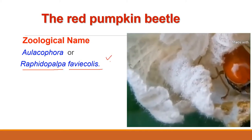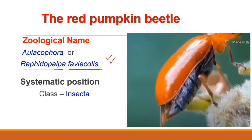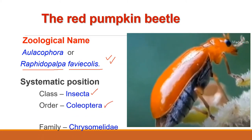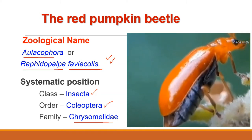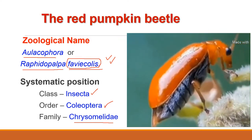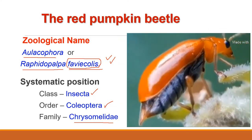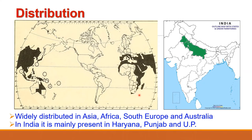Both names for the red pumpkin beetle are correct. As far as systematic position is concerned, it belongs to class Insecta, order Coleoptera, family Chrysomelidae, genus Aulacophora and species foveicollis. Regarding distribution, this beetle is widely distributed throughout Asia, Africa, Australia and southern Europe. In India, it is a serious pest in the north-western part, occurring in northern states like Punjab, Haryana and Uttar Pradesh. It is a serious pest of cucurbitaceous vegetables.